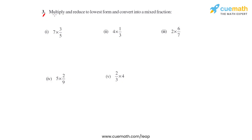Question number 3 says: multiply and reduce to the lowest form and convert into a mixed fraction the following. We'll start with the first bit wherein we have 7 times 3 over 5. When we multiply we get 7 times 3, which is 21, divided by 5.